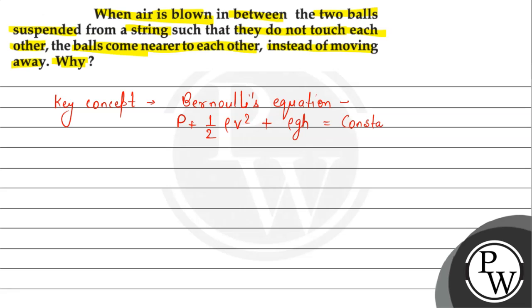If there is any fluid constant rate of flow. Now, if we look at the diagram of this question, there are two balls. Let's say B1 and B2. So, this is suspended from a string.